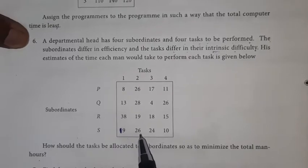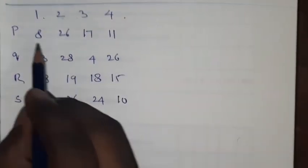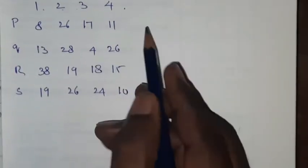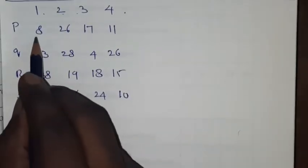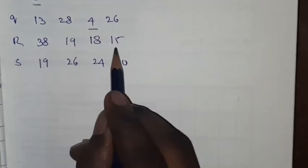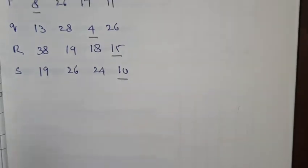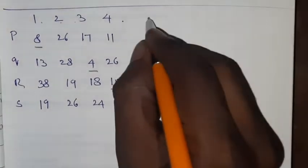Step one: Find the minimum value in each row. The minimum value in the first row is 8. In the second row the minimum value is 4. In the third row the minimum value is 15. In the fourth row the minimum value is 10. Now step one is complete.